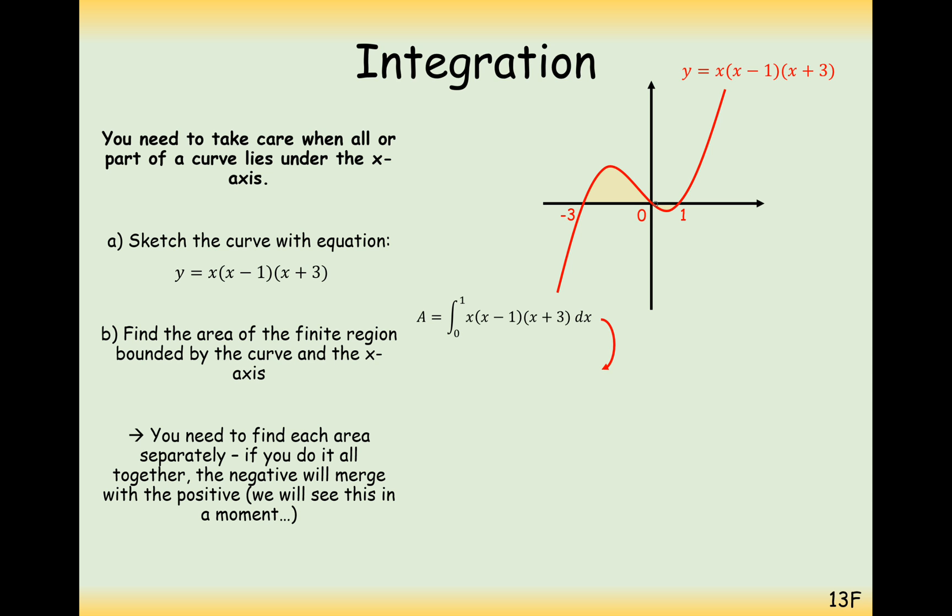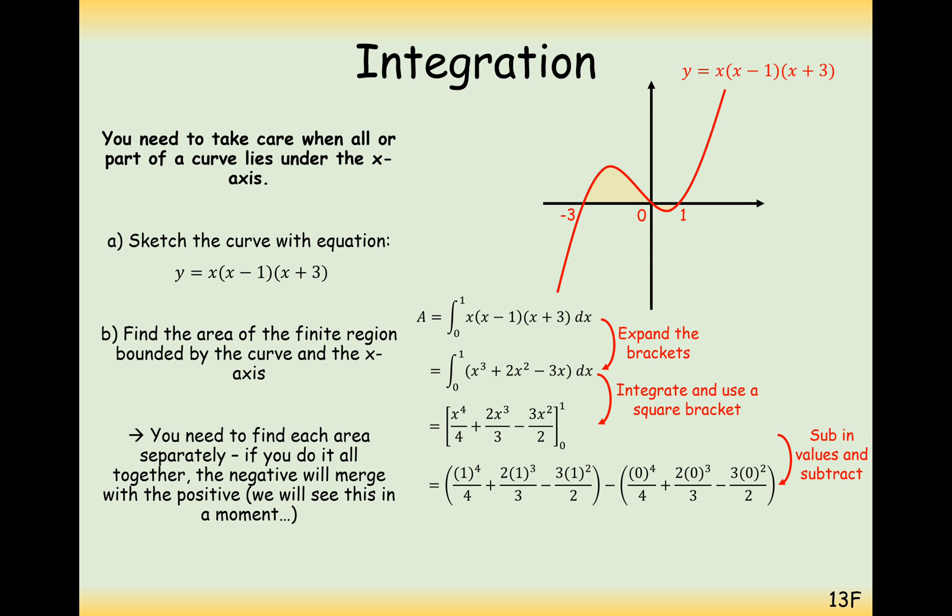So what we need to do first is to work out this area that's in between 1 and 0. We integrate between 1 to 0. We're going to expand our brackets, integrate, substitute in 1, take away the substitution of 0. And then that will equal minus 7 over 12. Now, what we'll do here is because we want to work out the total area, we'll make this positive. So the area that's in between 0 to 1 is just going to be 7 over 12.